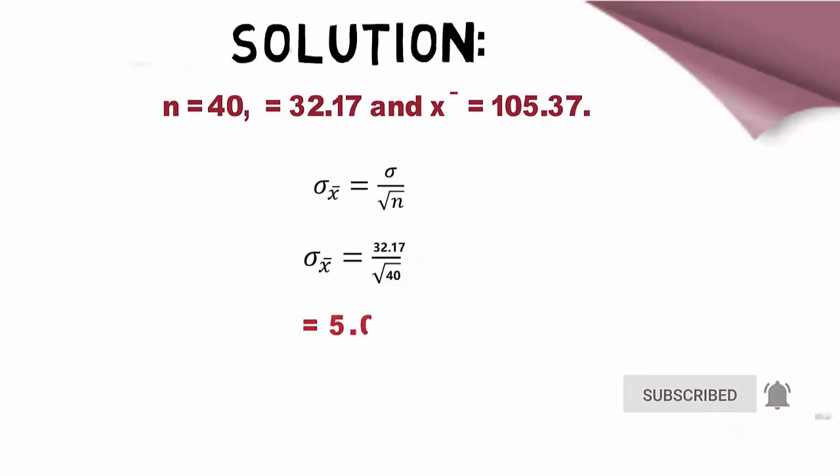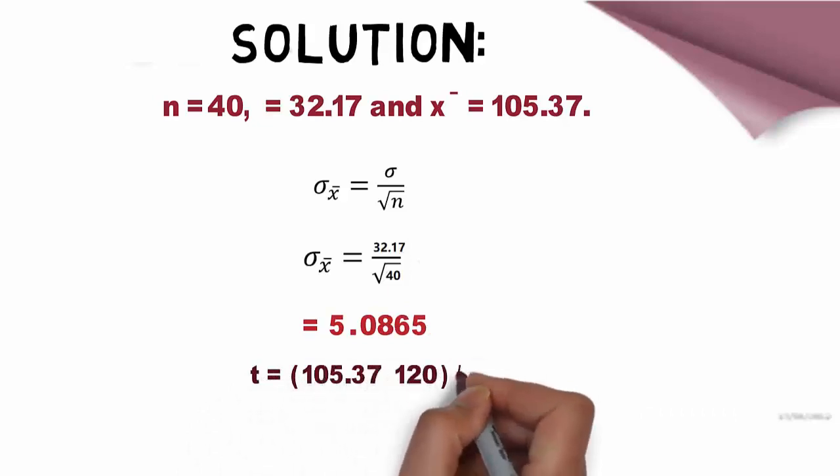Now, using the test statistic formula, we get t equals (105.37 minus 120) divided by 5.0865.